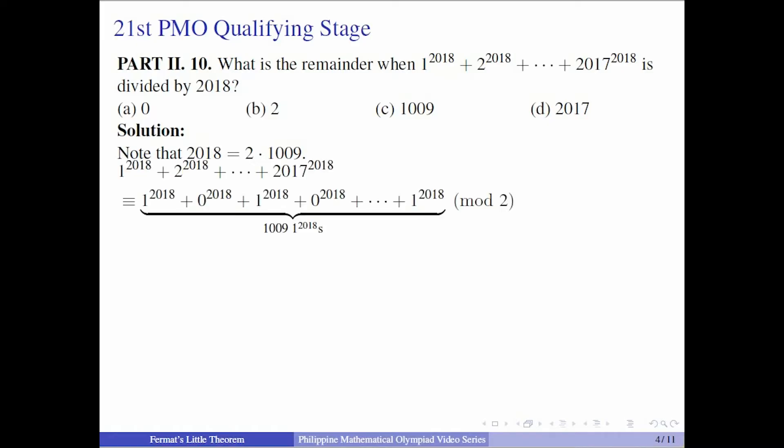We reduced the basis modulo 2. All of the odd will have base 1 while all of the even will have base 0. There are 1009 odds here. So we have 1009 times 1^2018, which is 1009, which is 1 modulo 2. From here, we know that the sum should be an odd number.